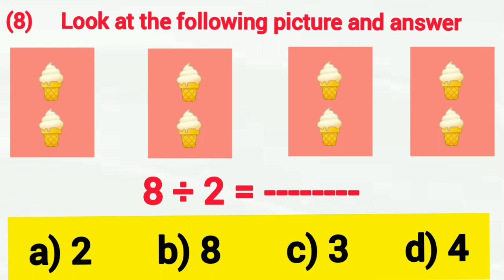There are 8 ice cream cones in the picture. These cones are in the groups of 2. Let's count dear children. How many groups of 2 are there? 1, 2, 3 and 4. On dividing 8 by 2, we get answer 4. So, we will put tick on option D.